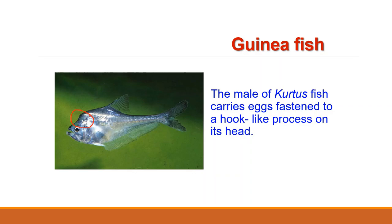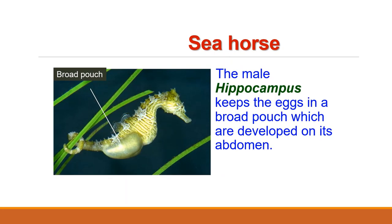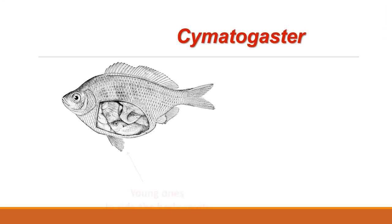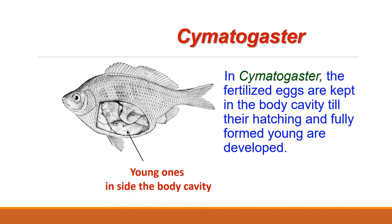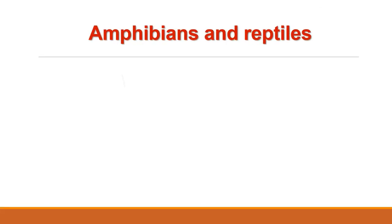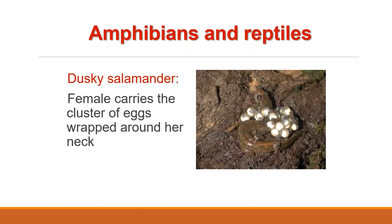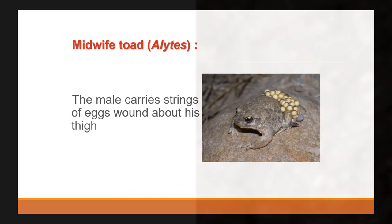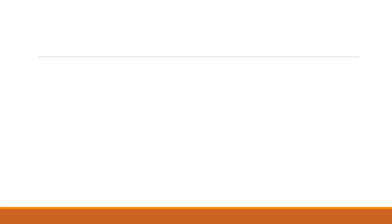The male seahorse, Hippocampus, keeps the eggs in a brood pouch which is developed on its abdomen. In Syngnathus, the fertilized eggs are kept in the body cavity till they are hatched and fully formed young ones emerge. In case of amphibians, the female dusky salamander Desmognathus fuscus carries a cluster of eggs wrapped around her neck. In the case of midwife toad Alytes obstetricans, the male carries strings of eggs wound about his thighs.